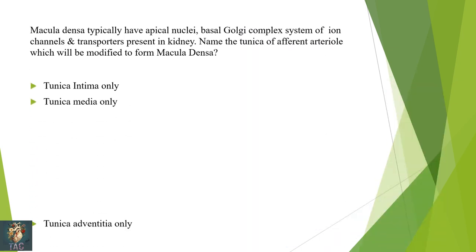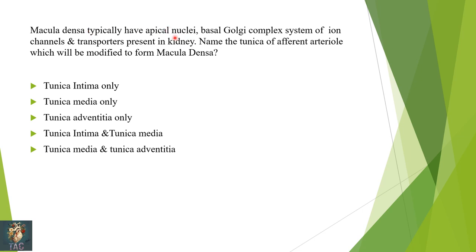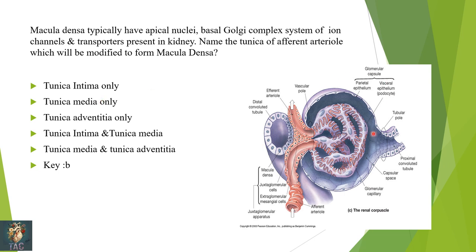Next: macula densa cells typically have apical nuclei and a basal Golgi complex with a system of ion channels and transporters present in the kidney. Name the tunica of the afferent arteriole modified to form macula densa. The tunica media is modified to form the macula densa of the juxtaglomerular apparatus. In this diagram you can see the afferent arteriole and the tunica media cells modified to form the cells of the juxtaglomerular apparatus.